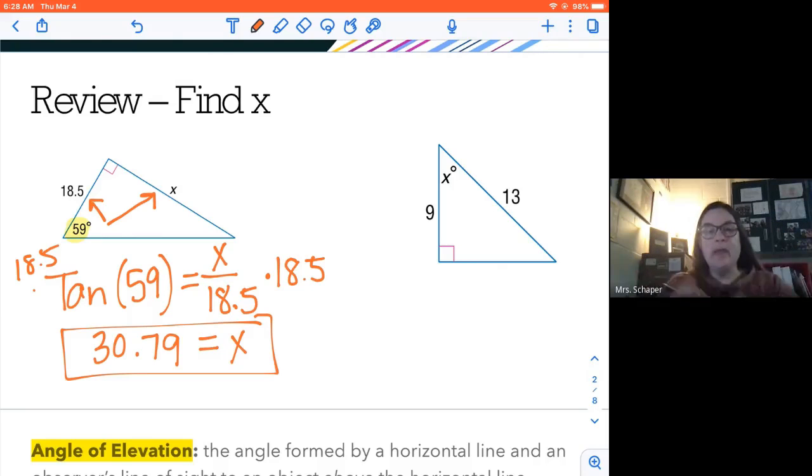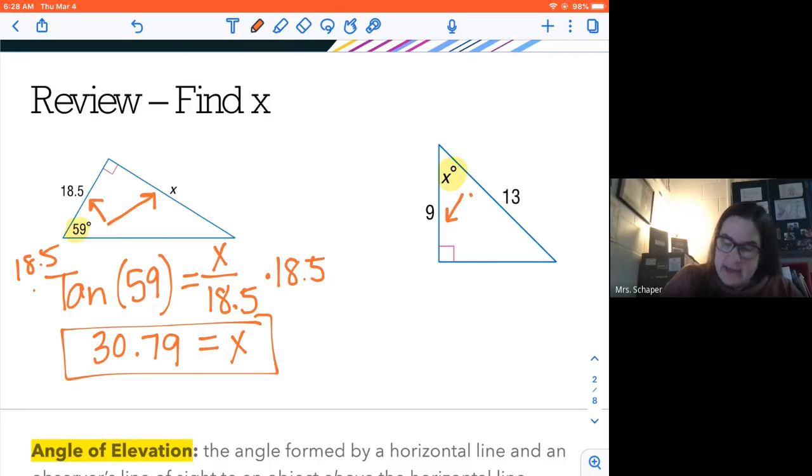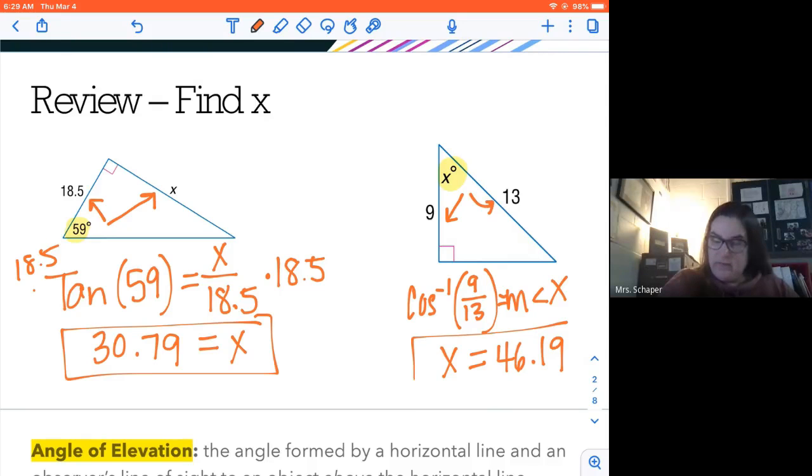All right. So we're using sine, cosine, tangent, the trig functions when you're trying to find a side. The inverse trig functions are used when you're trying to find an angle measurement. So when I look at this one, here's my angle. I've got adjacent and hypotenuse. So we're talking cosine. So I have the inverse cosine of adjacent over hypotenuse. 9 over 13 is equal to the measure of angle X. All right. So my calculator, I'm going to put inverse cosine, 9 divided by 13. And I'm going to get the measurement of angle X is 46.19. So this is kind of just a little bit of review because we're going to be using trig functions when we're talking about angles of elevation and depression.